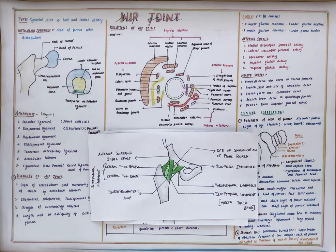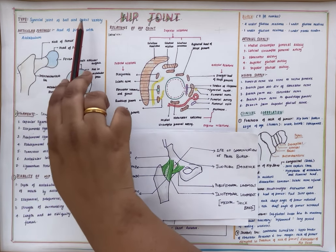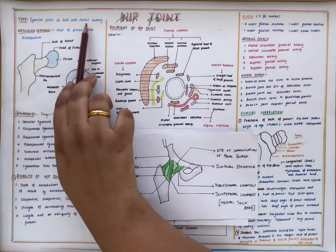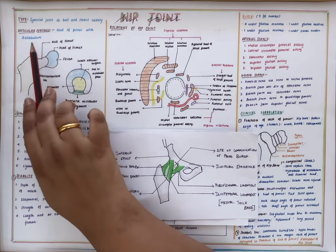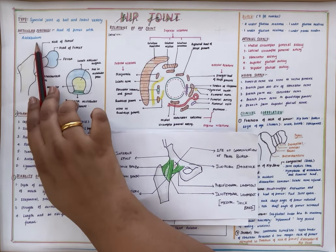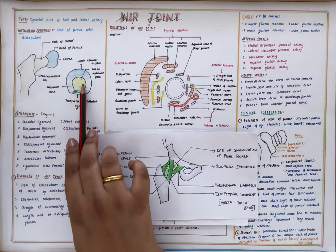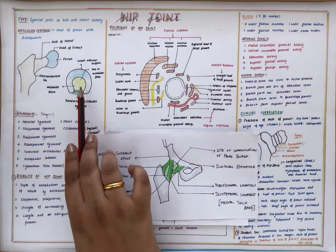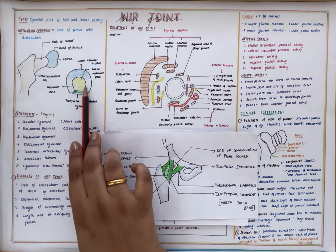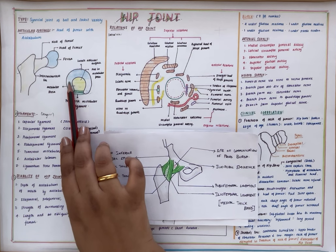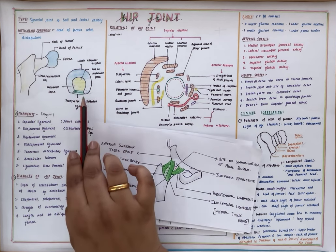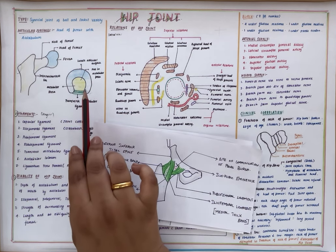Good morning everyone, we are going to be discussing the hip joint in this video. The hip joint is a synovial joint of ball and socket variety. The articular surfaces of the hip joint are the head of the femur and the acetabulum of the hip bone. The depth of the acetabulum is increased by the acetabular labrum lining the acetabulum.